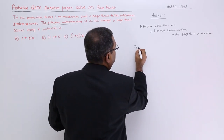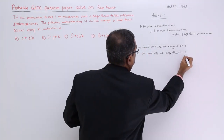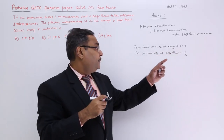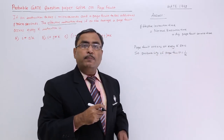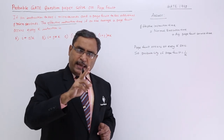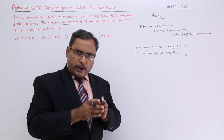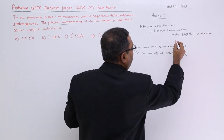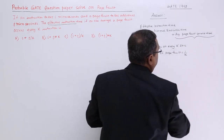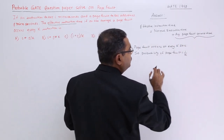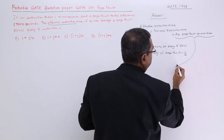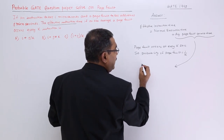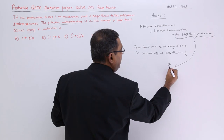A page fault occurs every k instructions. So the probability of a page fault is equal to 1/k. Therefore, the average page fault service time is equal to j/k.